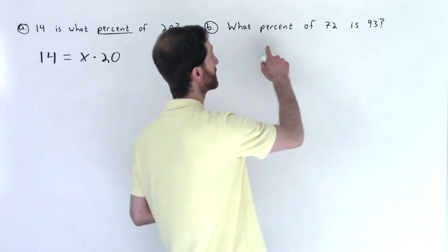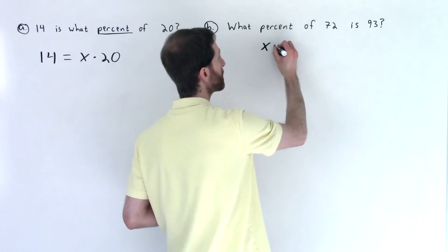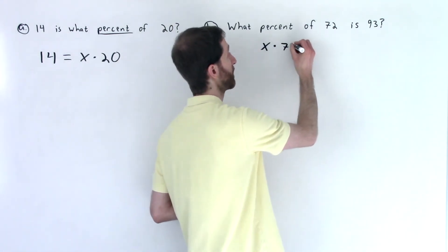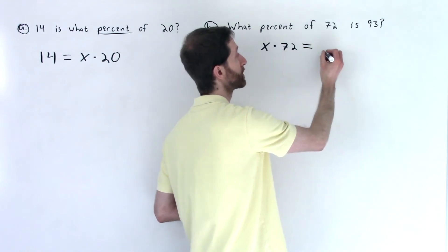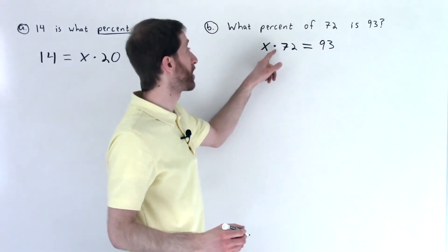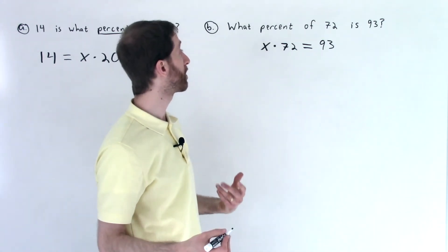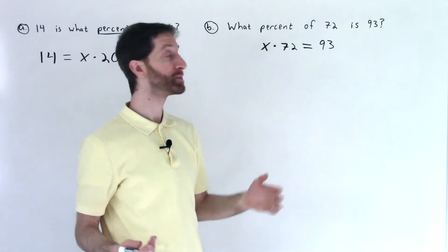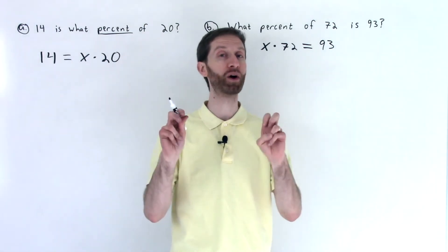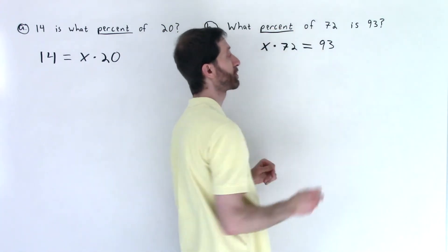This says: what percent of 72 — so that's an unknown amount x — of means multiplication, times 72, is equals 93. That's it. What percent, unknown amount, of 72 is 93? Now from here, I undo all that's being done in this equation. I have now done the new part with translating. Make sure that your answer is a percentage.